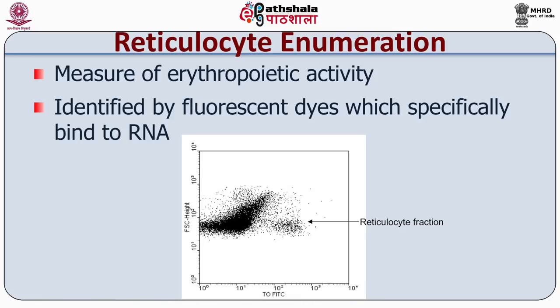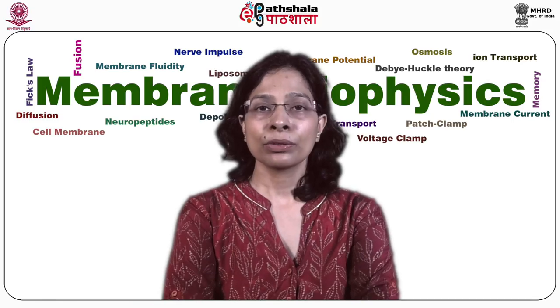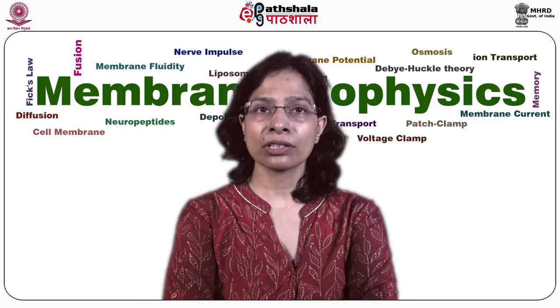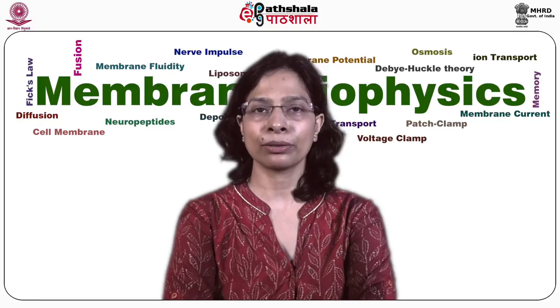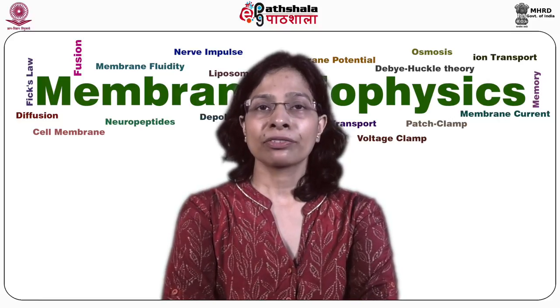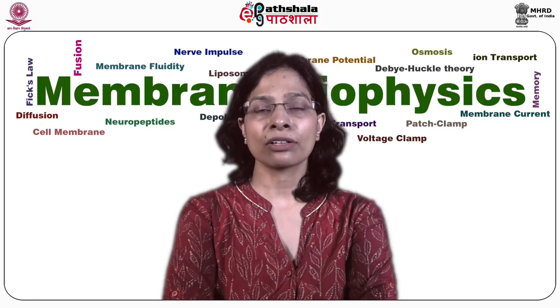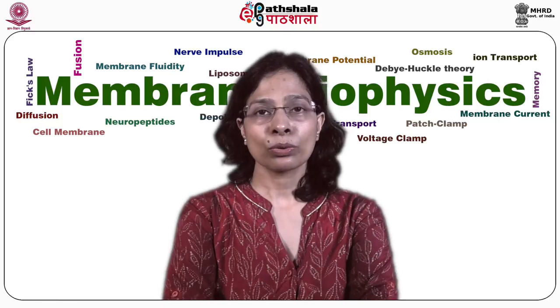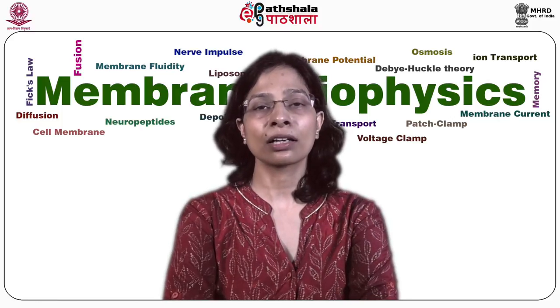Another application is the identification and enumeration of reticulocytes, which are immature red blood cells containing small amounts of residual RNA. Since red blood cells contain no nucleus, reticulocytes are identified by their RNA content using thiazol orange, a fluorescent dye that specifically binds to RNA, differentiating them from mature red blood cells. The reticulocyte fraction reflects erythropoietic activity and is useful in evaluating anemia and monitoring recovery in stem cell transplantation patients.